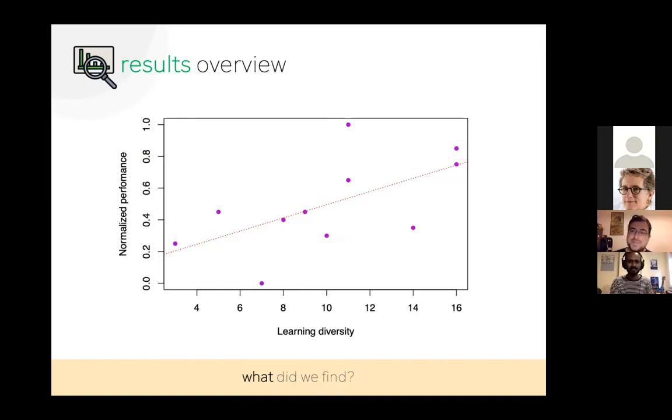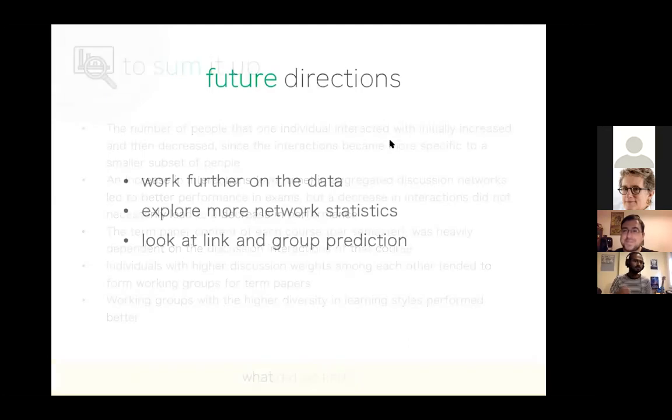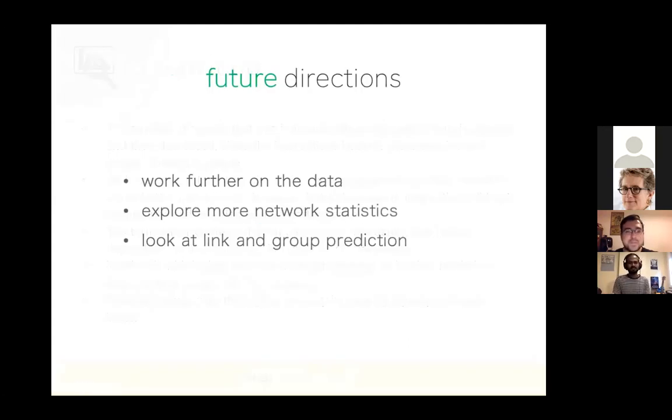In short, what we found: the number of people that one individual interacted with initially increased and then decreased since the interaction became more specific to a smaller subset of students. Increased interactions in aggregated discussion networks led to better performance in exams, but a decrease did not necessarily mean a decrease in performance. The term paper content of each course was heavily dependent on the discussion interactions of that course. Individuals with higher discussion rates among each other tended to form working groups for term papers. And finally, working groups with higher diversity in learning styles perform better in term paper projects. In future, I want to work further on this data, explore more network statistics, and specifically look at link and group prediction. With that, I would take any questions.